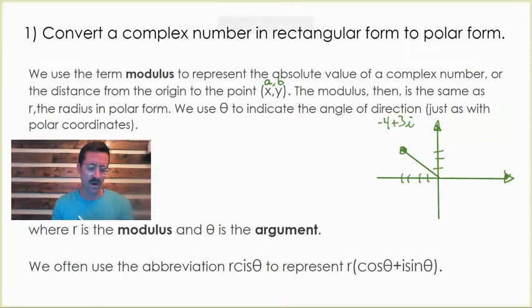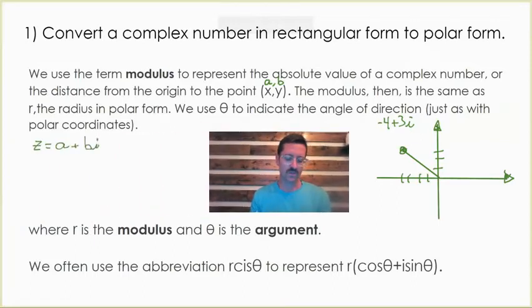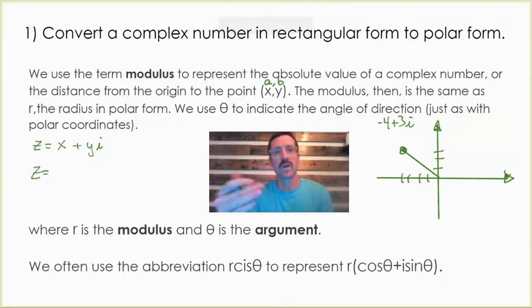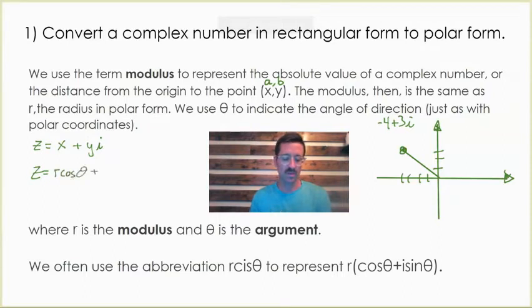We started with our complex values taking the form of a plus bi. But instead of a and b, we can use x for horizontal and y for vertical. If you remember from your polar functions unit, we know that x can be represented as r cosine theta, and y can be represented as r sine theta. So this y, I substitute for r sine theta, and the x got substituted for r cosine theta.